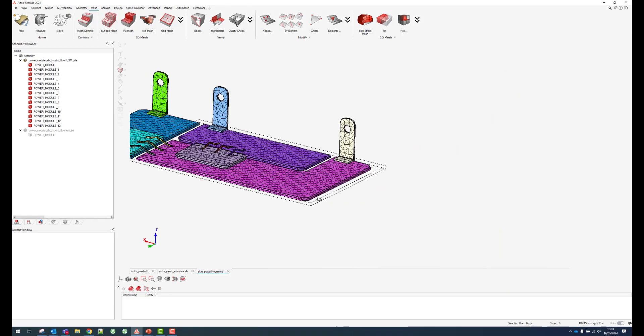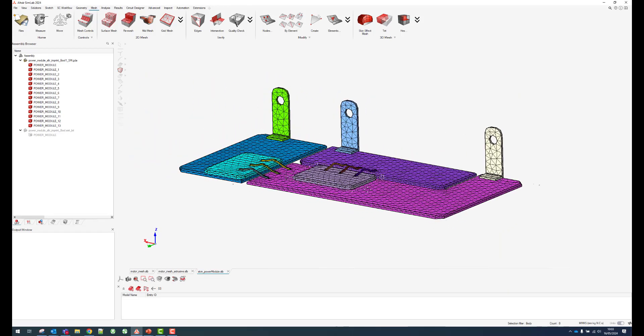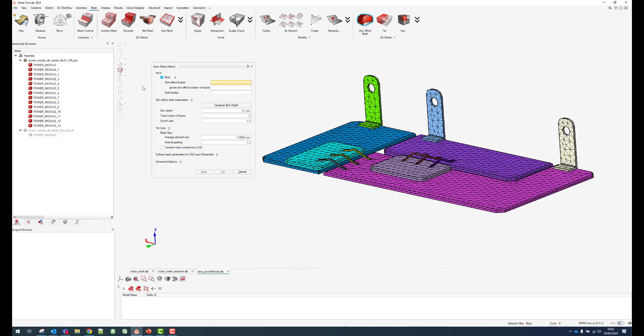If we have a look at our busbar application here we can see that I did a very coarse mesh on the surface. But then what I was able to do is use this skin effect mesh tool. When you do that you just need to have the surface mesh, you can run the skin effect mesh tool, compute the skin depth using this little tool, and then you can apply it on all these bodies.